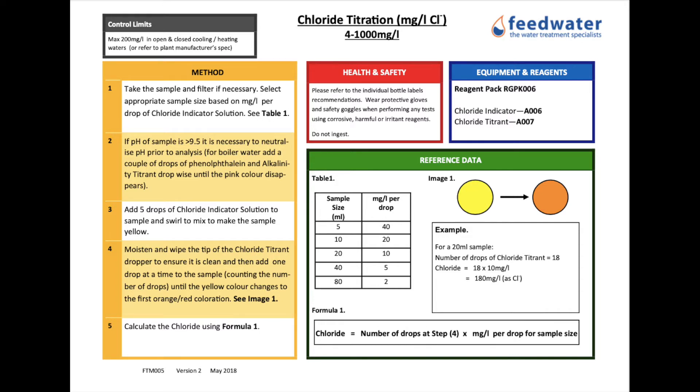This method can be used for chloride measurement in open and closed cooling and heating waters and boilers. The range for this method is 4-1000mg per litre. The control limits for chloride are a maximum of 200mg per litre in open and closed cooling and heating waters or refer to the plant manufacturer's specification.